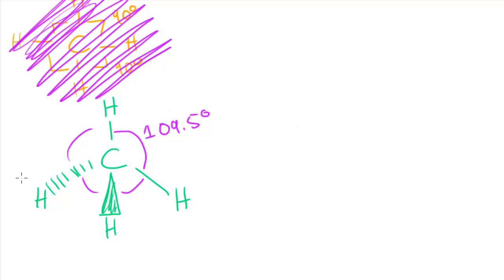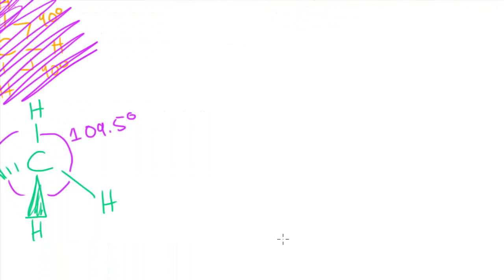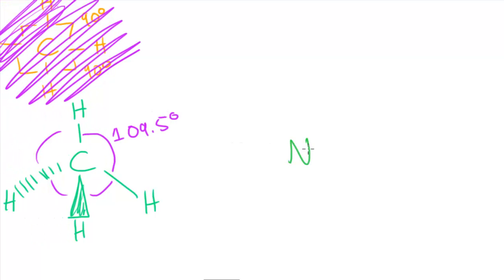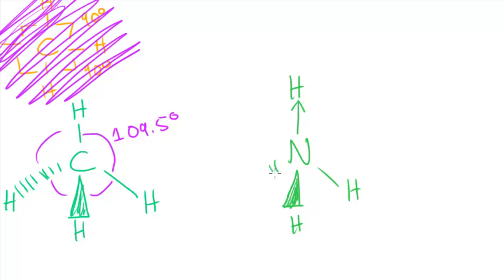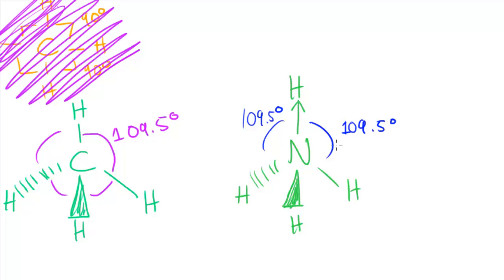Looking at the ammonium ion, a very similar thing happens: it repels in all those different directions. We have the nitrogen with a dative covalent bond to the H⁺ ion, plus the other hydrogens. All of these angles are the same as in methane — 109.5 degrees. This is the optimum angle you can get when you're in three-dimensional repulsion mode.